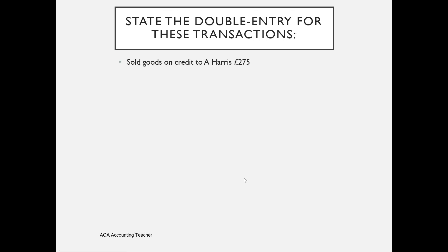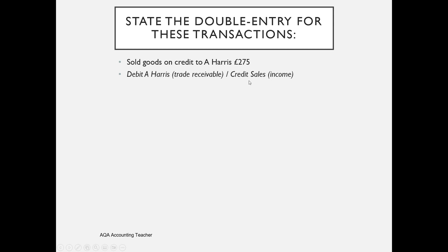Now let's look at some transactions. First, we sell goods on credit to A Harris — A Harris is a credit customer, so no money has changed hands. The double entry is to debit A Harris (trade receivable), setting up an account in the name of A Harris, and credit sales. One of the four rules of double entry bookkeeping is that sales is always credited. The debit depends on how it's paid; since no money has been received, we debit A Harris.